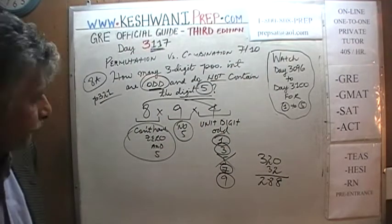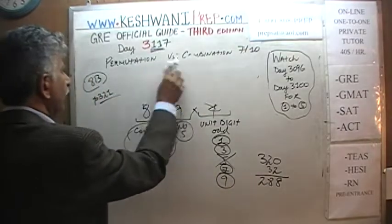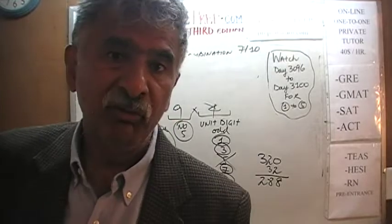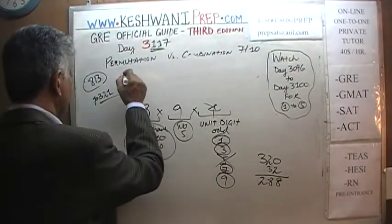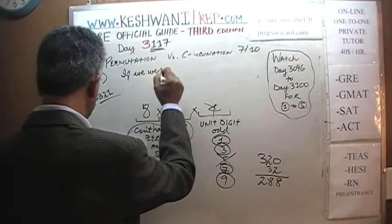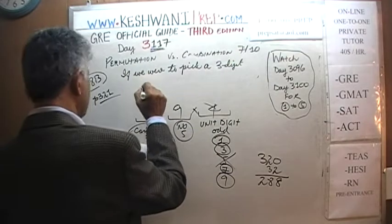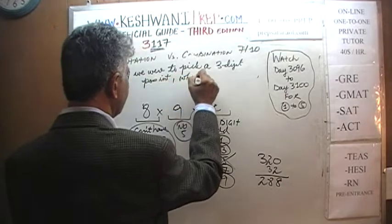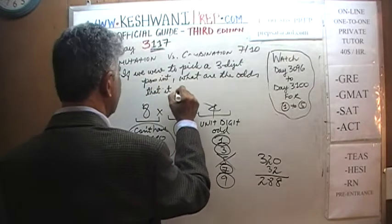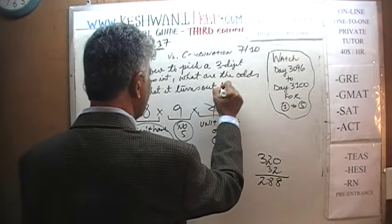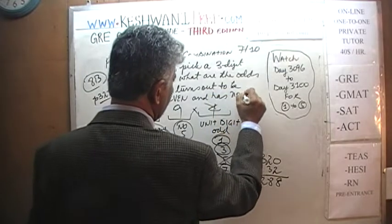Let's do one more — Part B. After I finish writing the problem on the blackboard, I would like you to pause the video, do the problem yourself, and then we'll compare your work against what we do together. The question is: if we were to pick a three-digit positive integer at random, what are the odds that it turns out to be even and has no four in it?